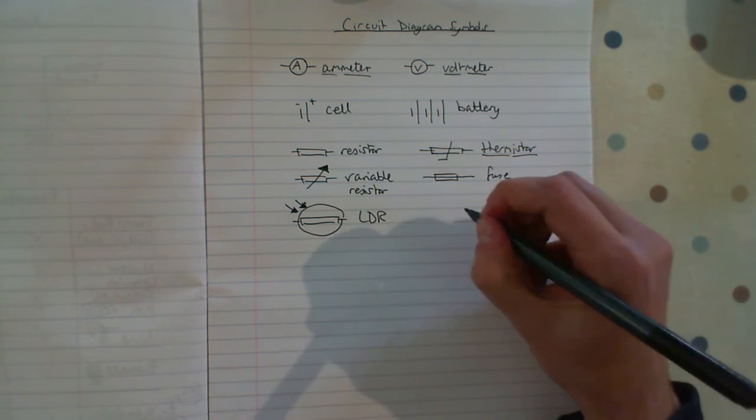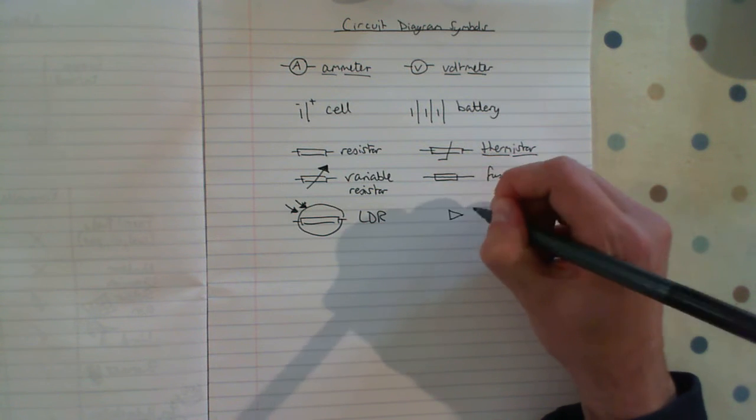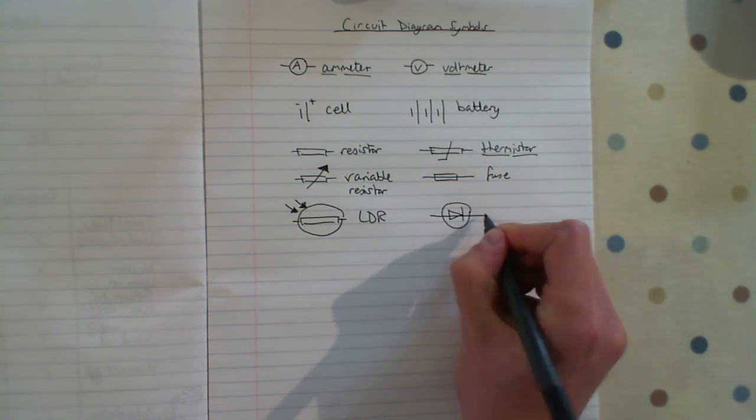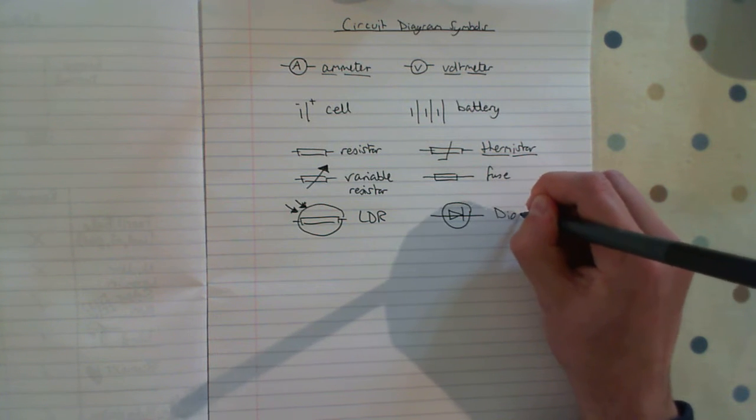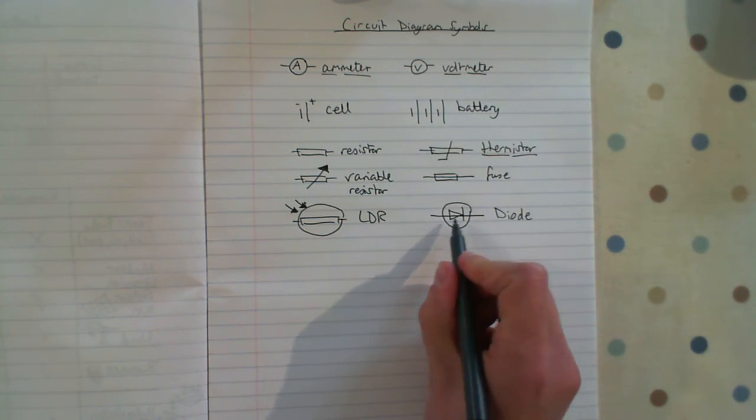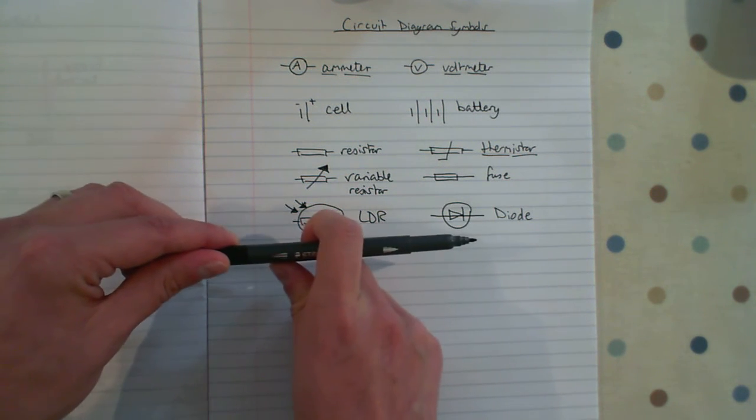If you see any circuit diagrams with a triangle in it, it's got to be a diode. What the diode does is it only allows the current, which we'll talk about in the next video, to flow in one direction. So in this case, it's flowing in that direction only.